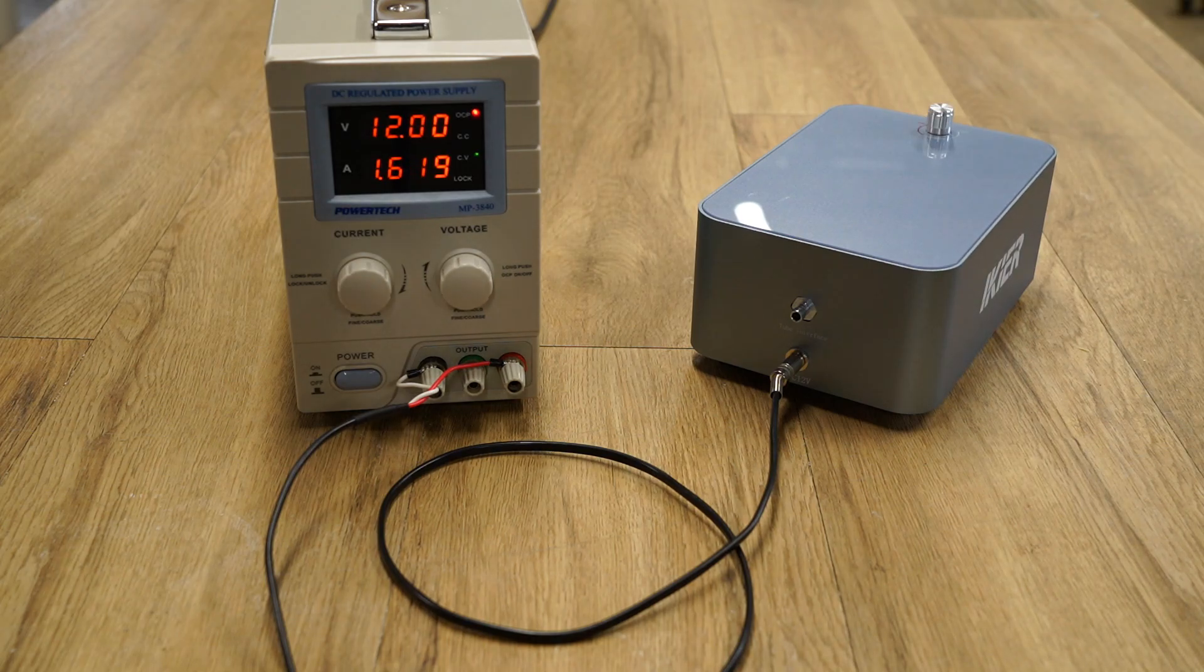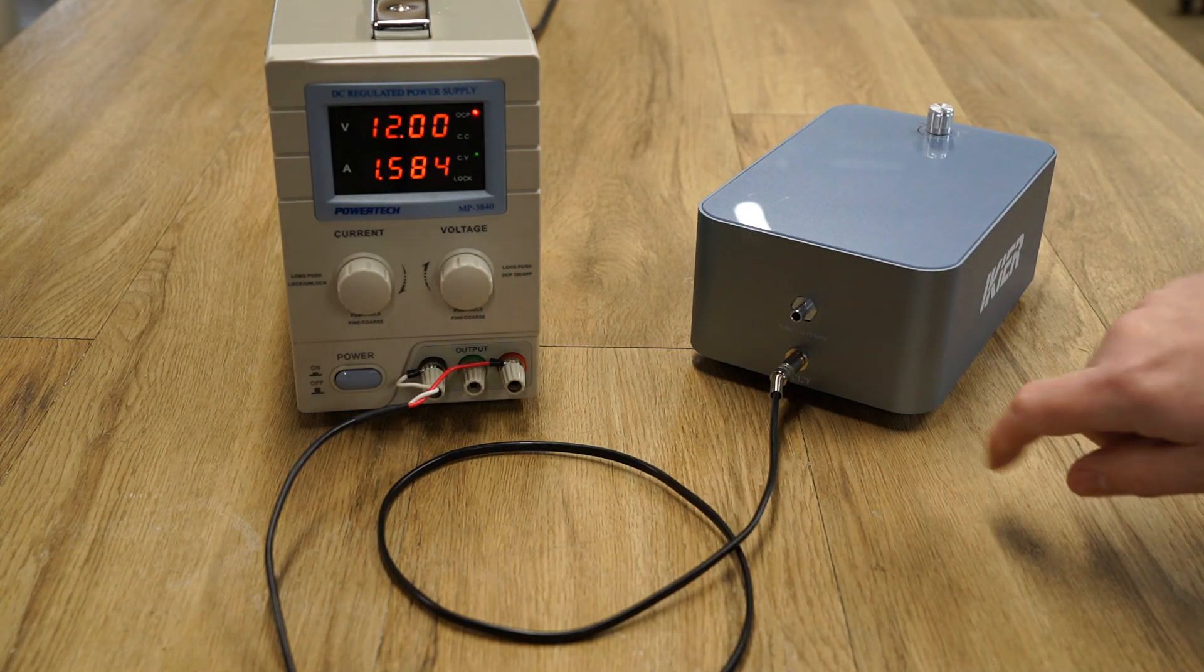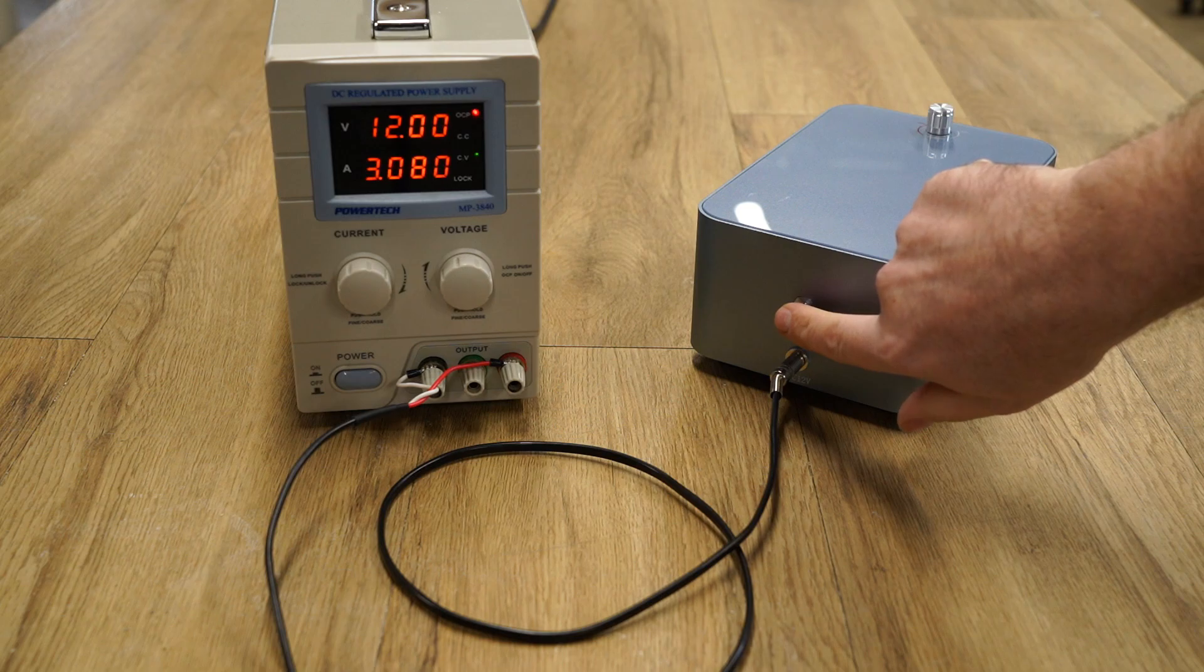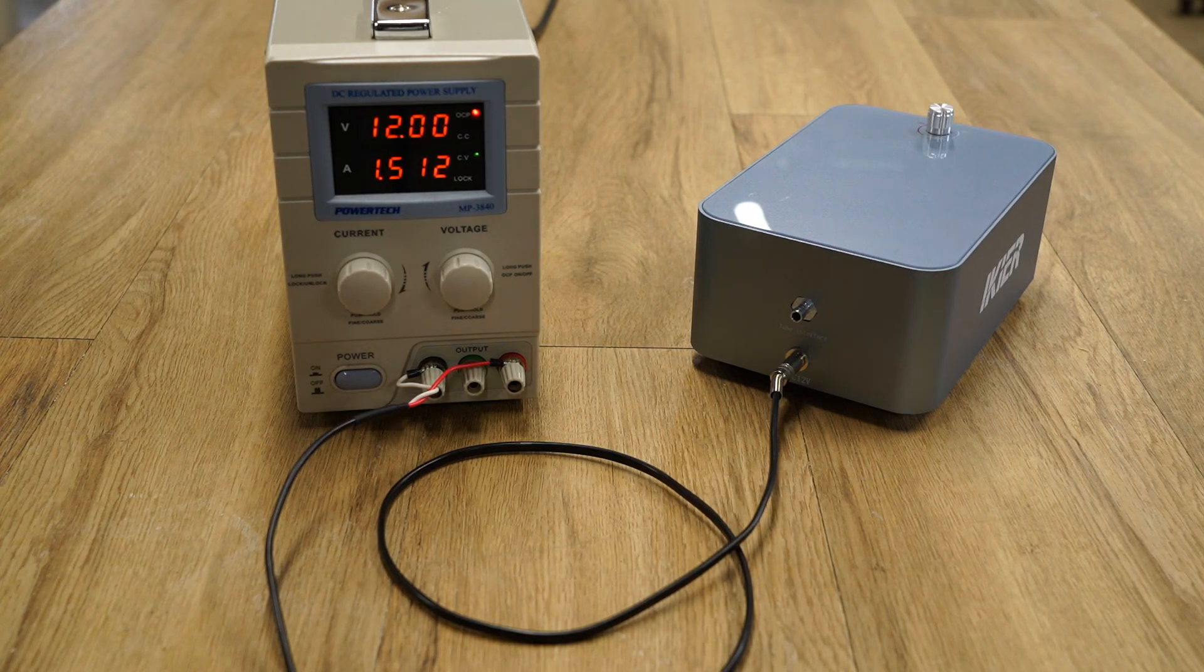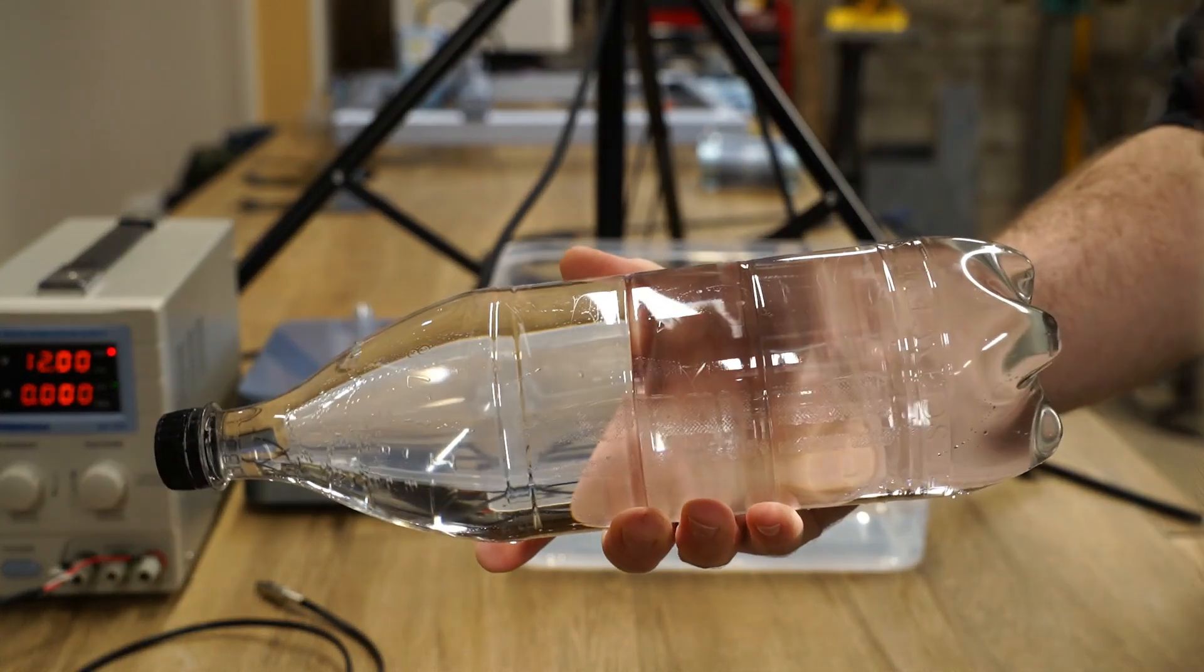While the Pro Max compressor was drawing around 1,600 milliamps and over 3,000 milliamps with some back pressure. So we've learned the Pro Max compressor draws about double the power, but how does that translate in terms of air volume output?